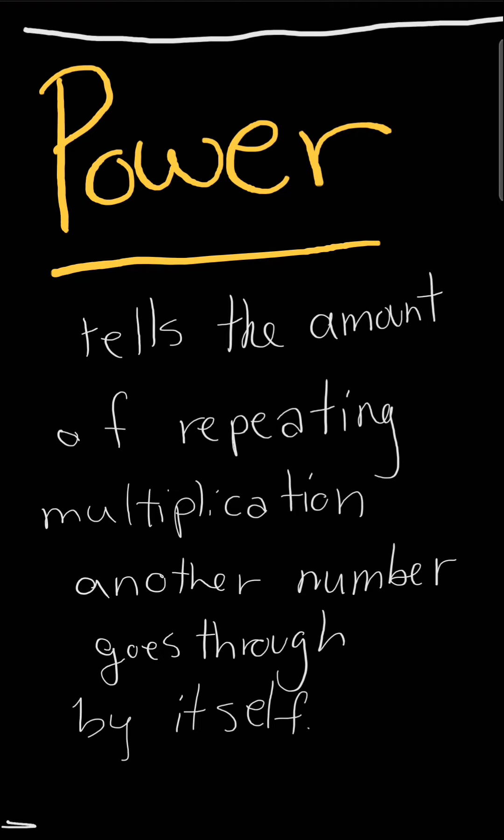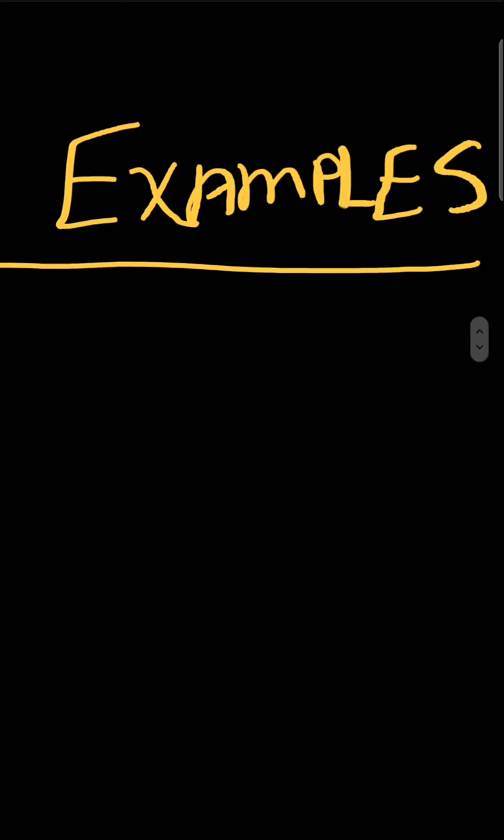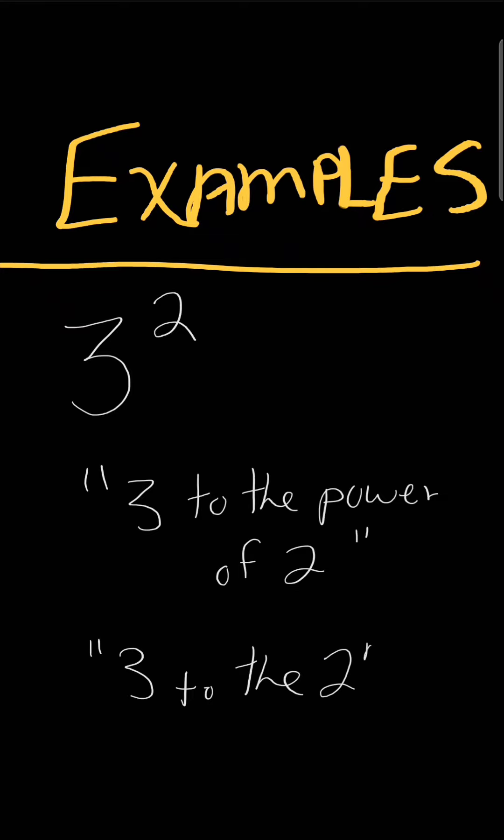Alright, if that little definition doesn't explain it, maybe a little further explanation will. Alright, so let's look at an example. For a number to have the power of another number, if I have 3 to the power of 2, we can read this as 3 to the power of 2, we can also say 3 to the second power, and we can also say 3 raised to the second power or 3 raised to the power of 2.